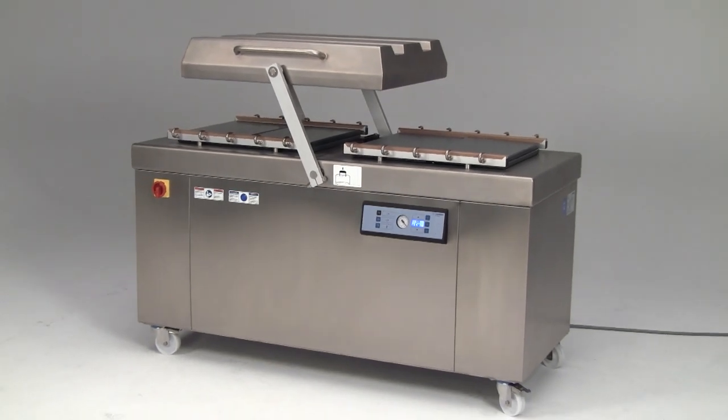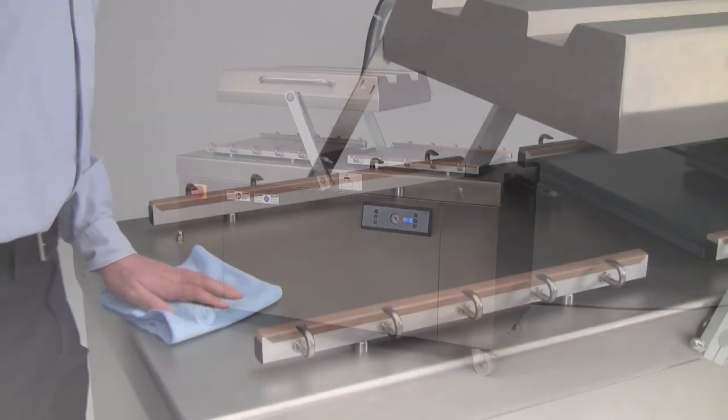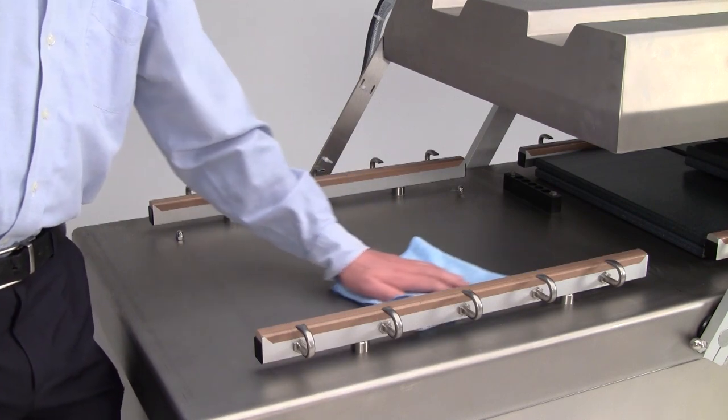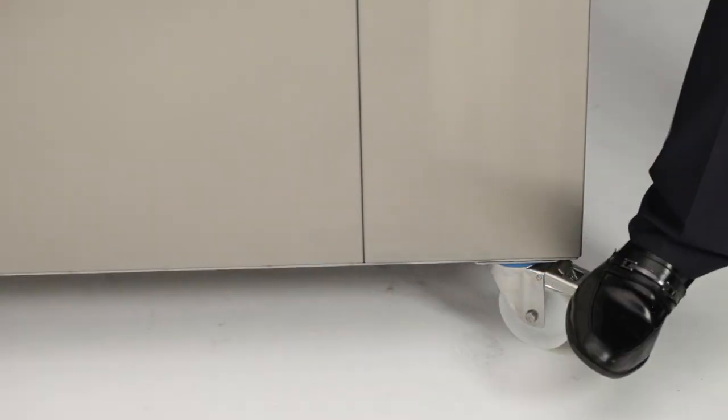This is the Multivac P600 double chamber machine. It's made with stainless steel construction and, like the P400, has casters with lockable front wheels.